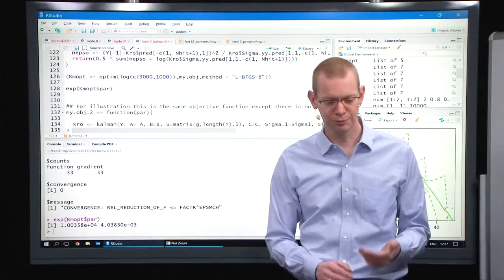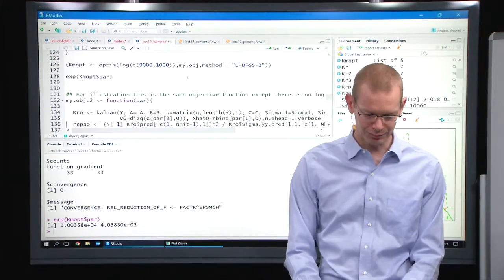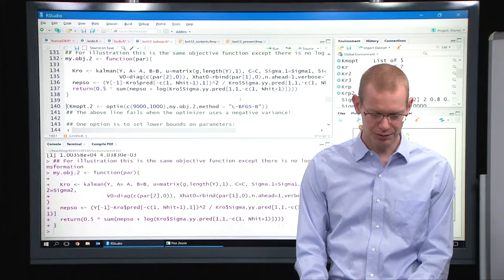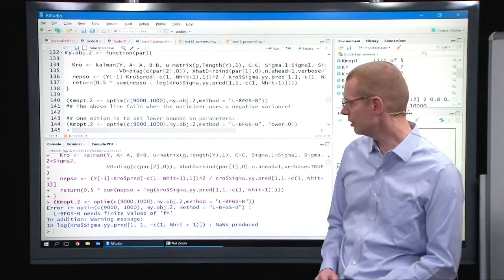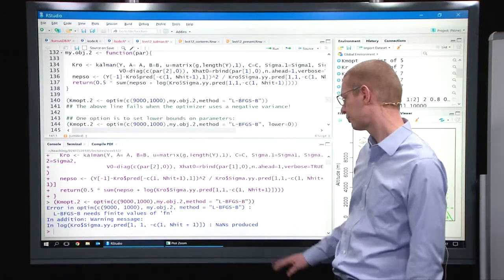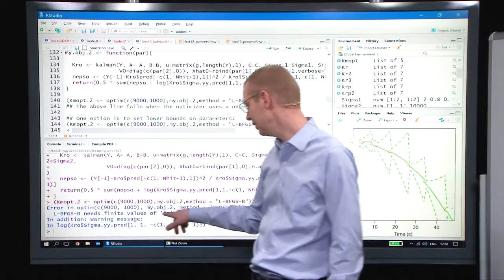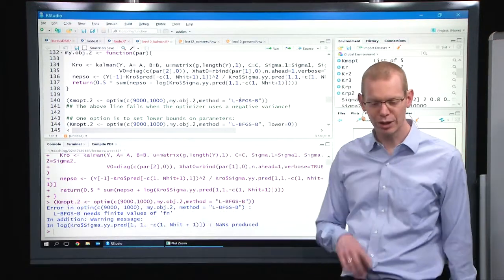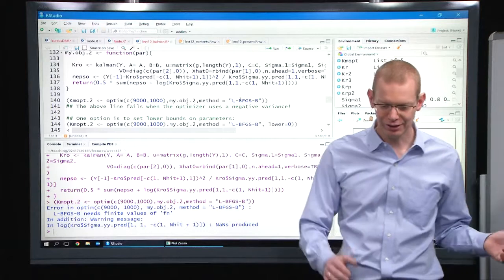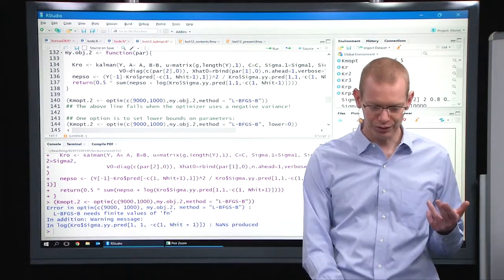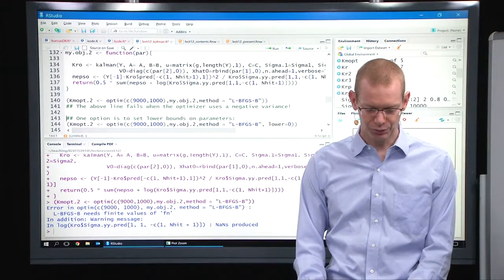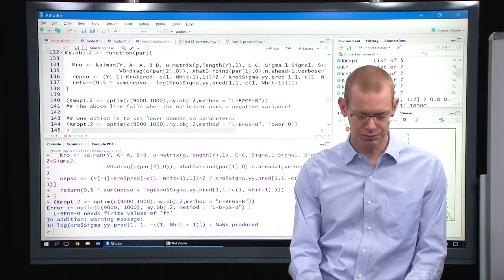Now, if you do the same thing without the logarithm, I just did the logarithm, but let's just do the same. Everything here is the same, except that the parameters in here don't have the exponential part. If I run the same optimization, I get an error. So why do I get an error? What is the error? I need to have finite values of the objective function. So what happens here is when I don't do anything to it, it will try negative values for the covariance here, and you cannot have a negative element in the diagonal of a variance matrix.